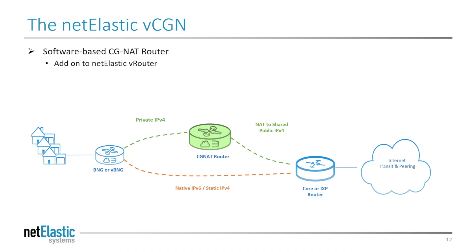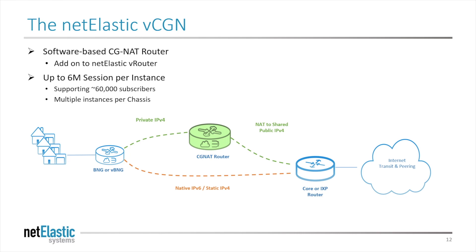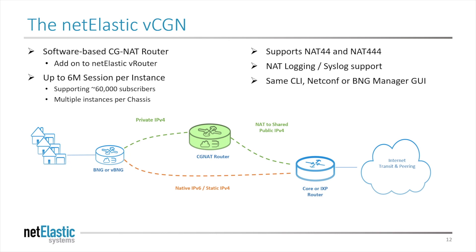The Netelastic Virtual CGNAT is a network function, or VNF, that runs on top of the Netelastic V-Router. It provides up to 6 million sessions per instance, allowing tens of thousands of IPv4 users to reach the Internet. The Netelastic CGNAT router provides NAT44 support, meaning that we focus exclusively on amplifying the number of subscribers you can support with a small public IP pool. It supports NAT logging capability with local storage or syslog support for small to large use cases, and uses the same popular GUI found in the V-Router. It provides a one-click upgrade to a full BNG should a service provider's growth require that, and since it runs atop a powerful V-Router on a powerful server, it's completely redeployable should we ever reach IPv6 ubiquity.